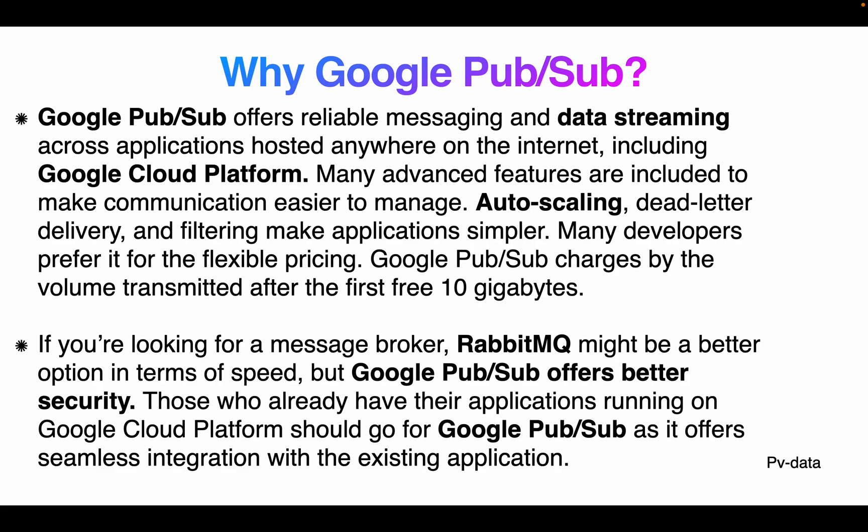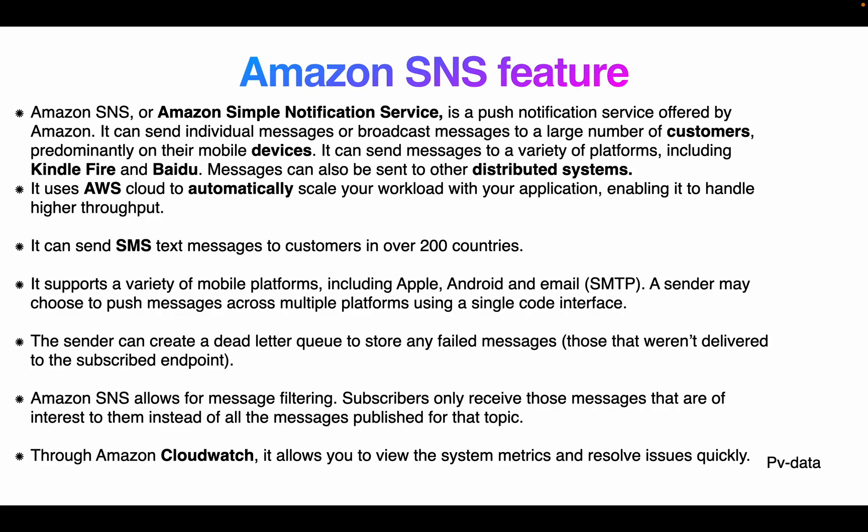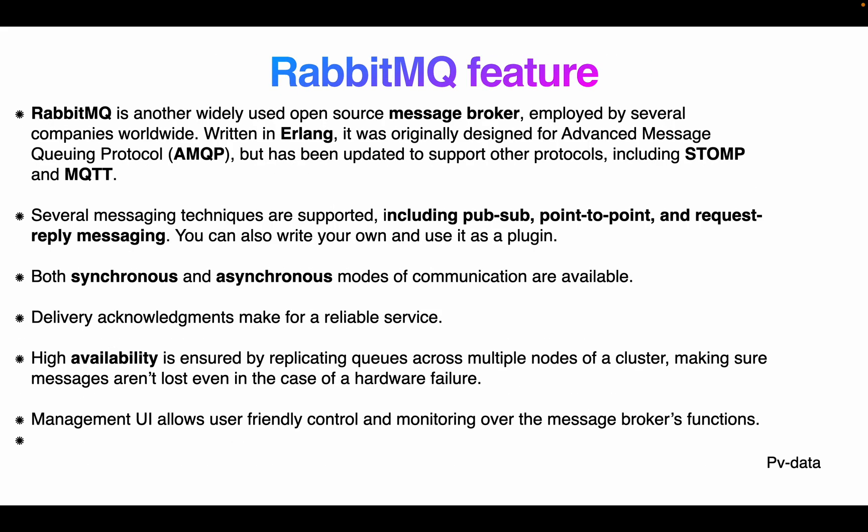Many developers prefer the flexible pricing model — Google Pub/Sub charges by volume transmitted after the first free 10 gigabytes. If you are looking for a message broker, RabbitMQ might be a better option in terms of speed, but Google Pub/Sub offers better security. For those who already have applications running on Google Cloud Platform, Google Pub/Sub offers seamless integration.